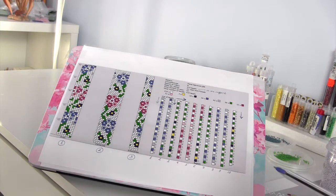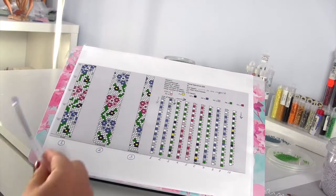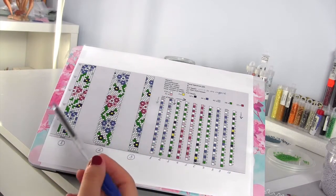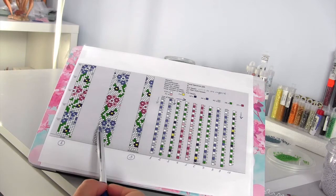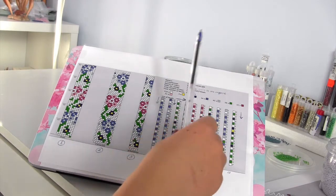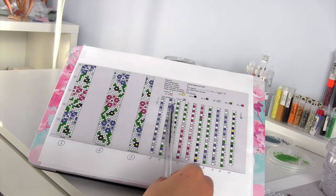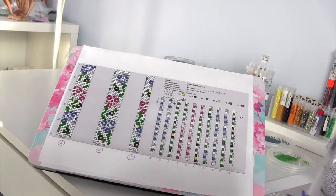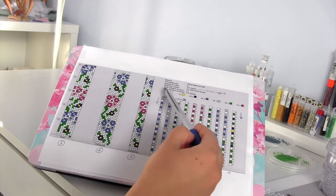For this technique, whatever scheme you get, this is the general overview that you will get. So basically you will see three columns on the left here and then on the right you will see the sequence of the beads that needs to be strung on the thread. So let's start from the information at the top.